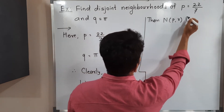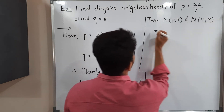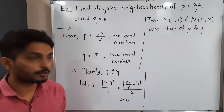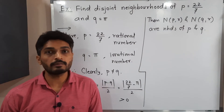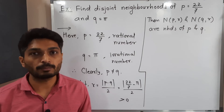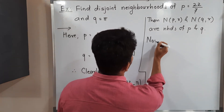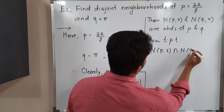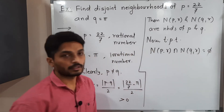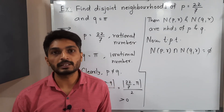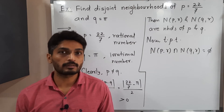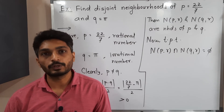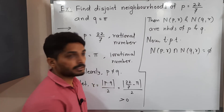Then N(P,R) and N(Q,R) are neighborhoods of P and Q respectively. Our task is to prove these neighborhoods are disjoint — nothing is common between them. To prove N(P,R) ∩ N(Q,R) = ∅, we use the standard mathematical technique: assume the contrary and derive a contradiction. Let if possible N(P,R) ∩ N(Q,R) ≠ ∅.